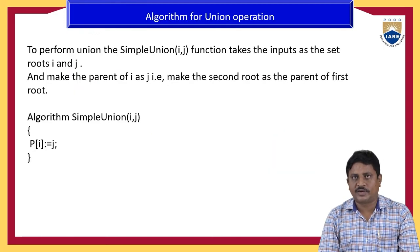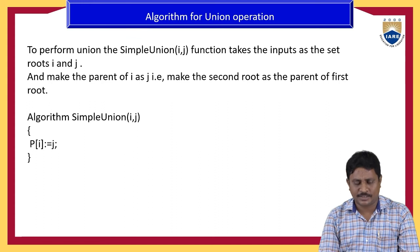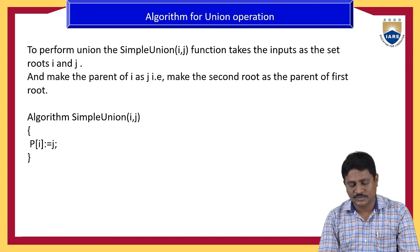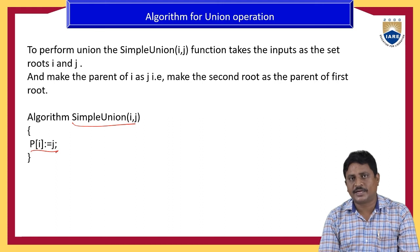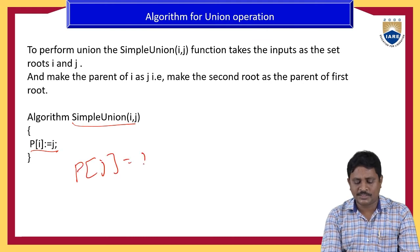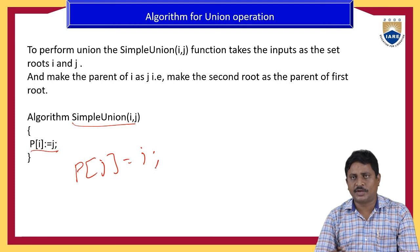Algorithm for union operation — simple union of i comma j: the function takes the roots i and j as inputs. We make the parent of i equal to j, that is P of i equals j. Or another way is P of j equals i — making j the parent node of i. Either way is correct in simple union.